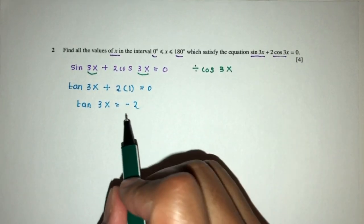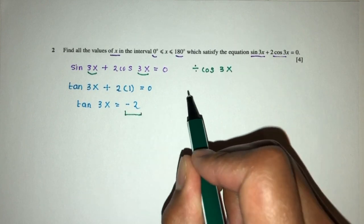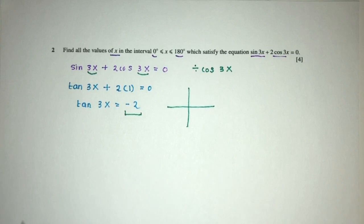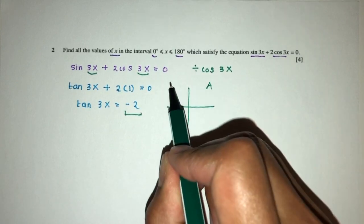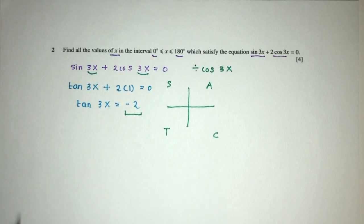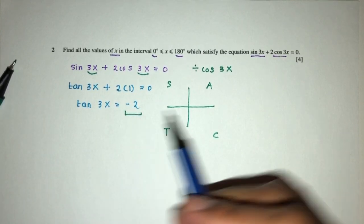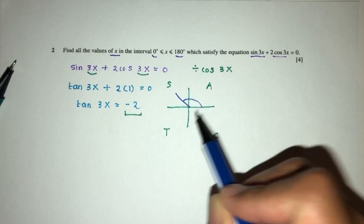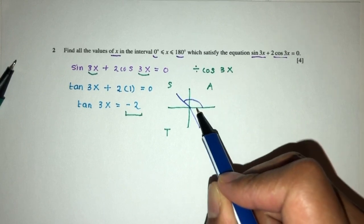Now you can see that here we have a negative value, so we have to use the quadrants. So this is A, S, T, C. Now, when tan is negative, it will be in the second quadrant and in the fourth quadrant.